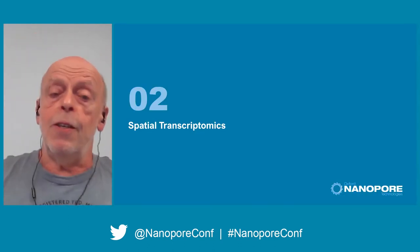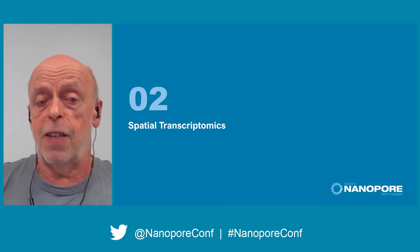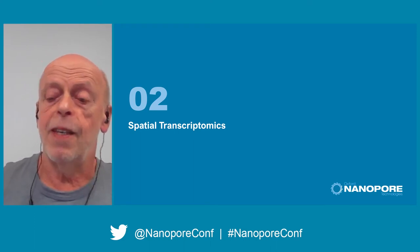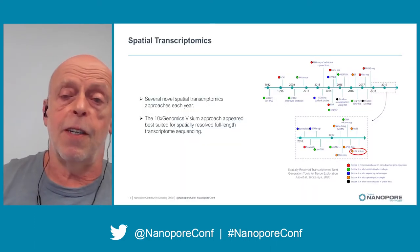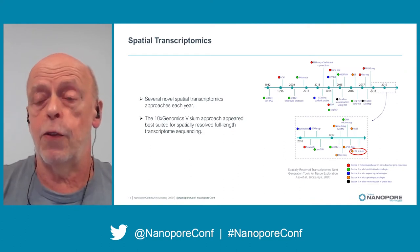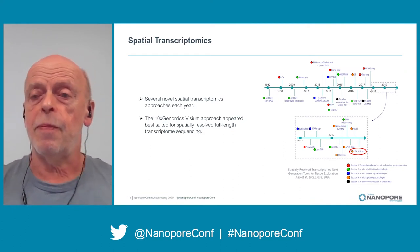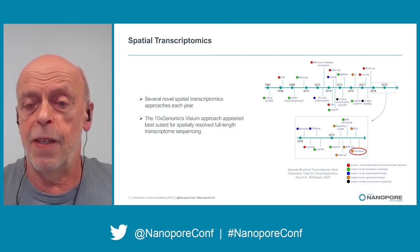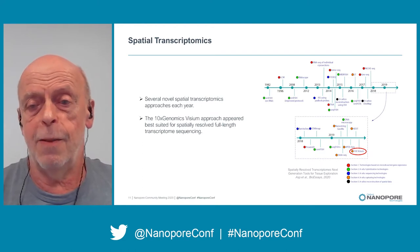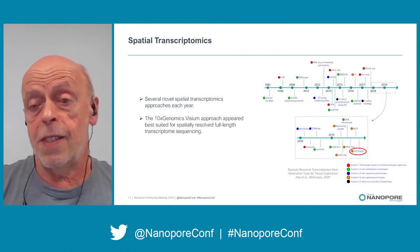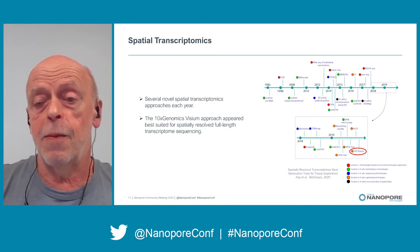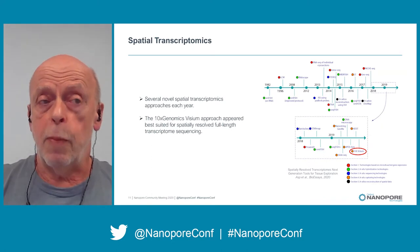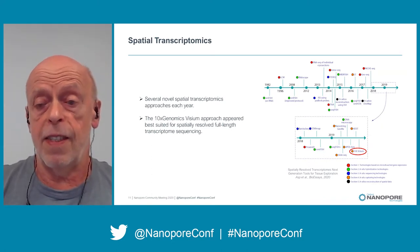You don't just need to know in which cell a transcript is expressed — you also want to know in which part of a tissue it's expressed. There are lots of techniques for spatial transcriptomics, and every year a couple of new ones come out. Most are based on in-situ hybridization, some use in-situ sequencing, and others use in-situ cDNA synthesis. We were seeking an approach that would allow us to obtain spatially resolved full-length sequence information.